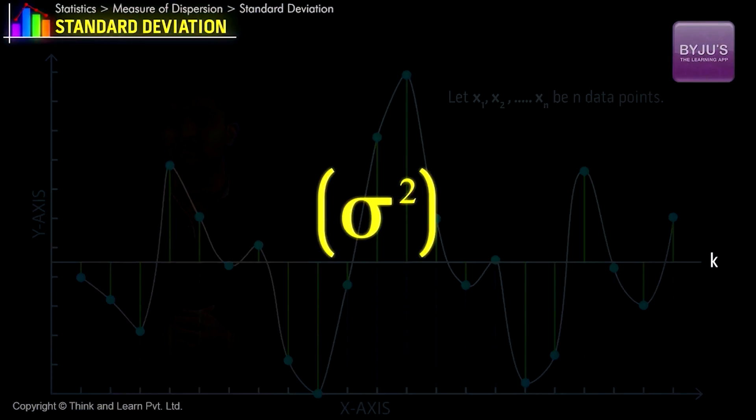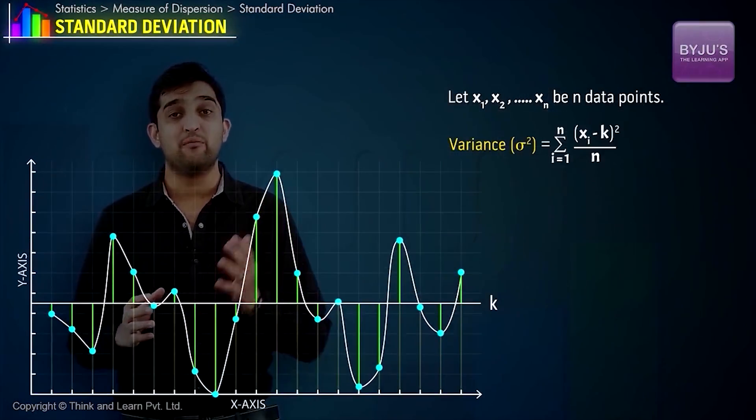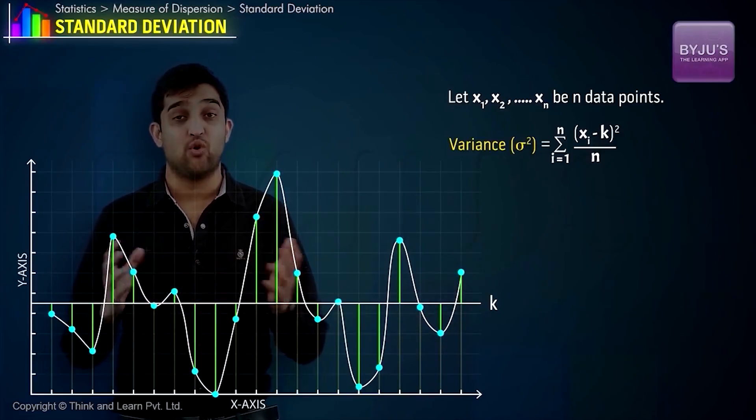Variance is denoted by σ² and is given by (1/n) Σ(xᵢ - k)².